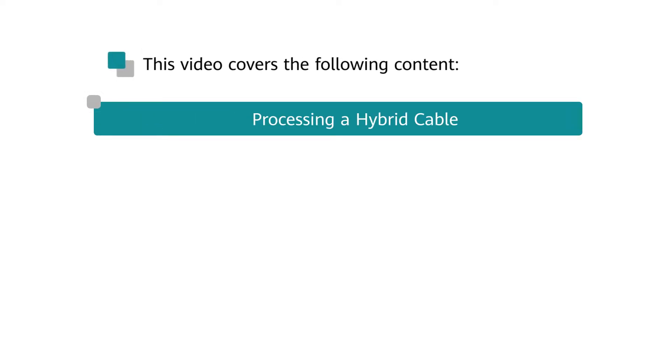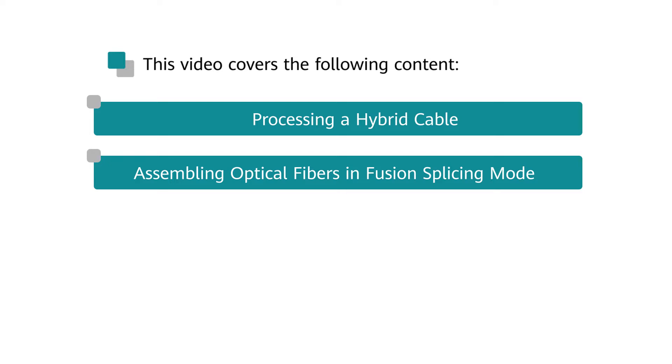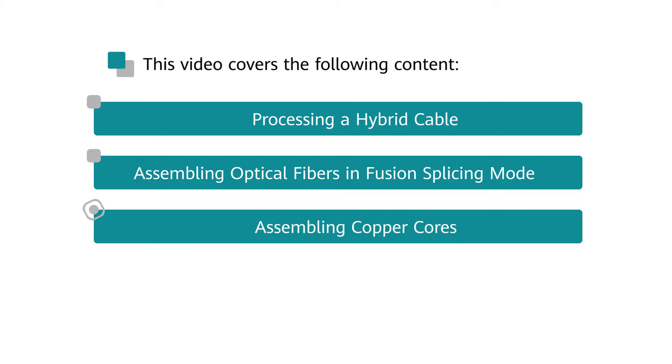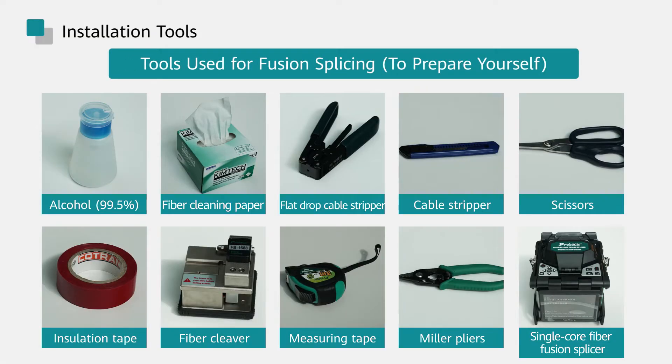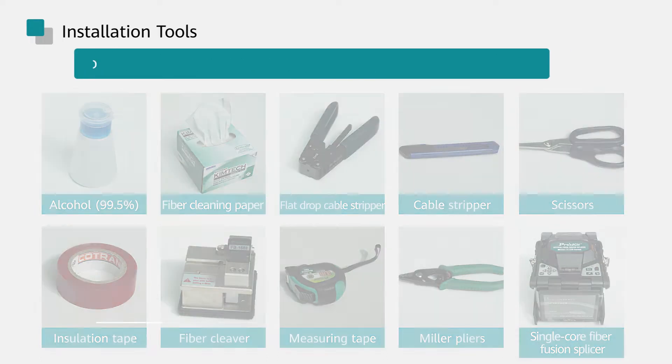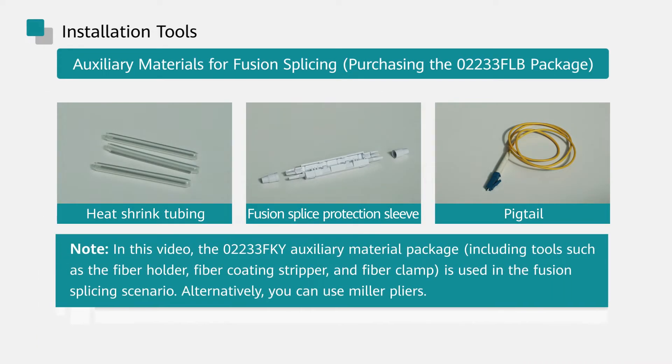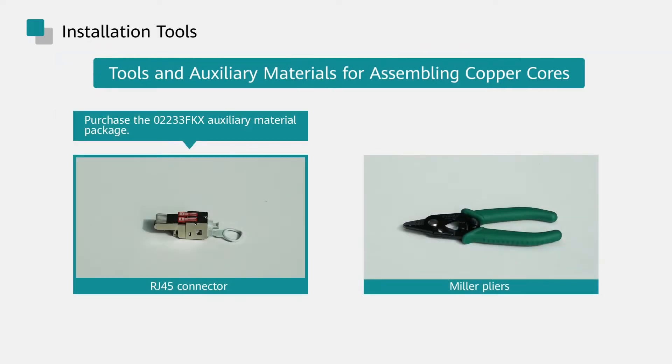This video will demonstrate how to process a hybrid cable, assemble optical fibers in fusion splicing mode, assemble copper cores, and connect a hybrid cable. In the mechanical splicing scenario, you also need to prepare the tools yourself and purchase the 02233 FLB auxiliary material package. Tools and auxiliary materials for assembling power cores are also required.